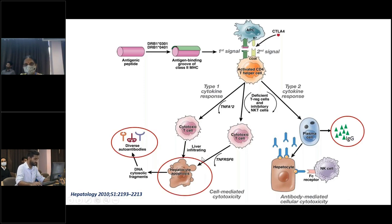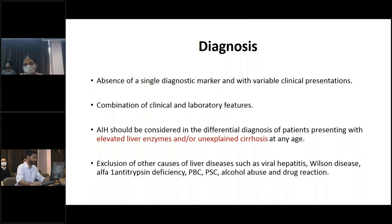The diagnosis of autoimmune hepatitis depends on the extent of liver injury, the presence of diverse antibodies, and IgG levels. Diagnosis is difficult due to the absence of any single diagnostic marker and variable clinical presentation. A combination of clinical and laboratory features is required. Autoimmune hepatitis should always be considered in the differential diagnosis of patients with elevated liver enzymes or unexplained cirrhosis at any age, and other causes such as viral hepatitis, Wilson's disease, and biliary diseases should be ruled out.